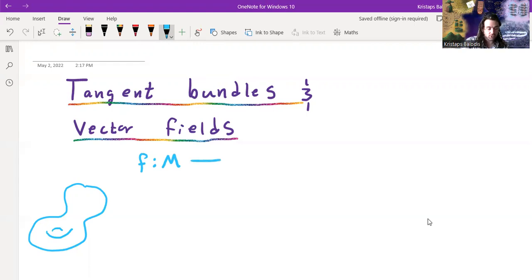So really, this is a map from the manifold into the disjoint union of all of the tangent spaces. Disjoint, because we don't want to think about these tangent spaces as sort of interacting. They're their own separate spaces at each point of the manifold.